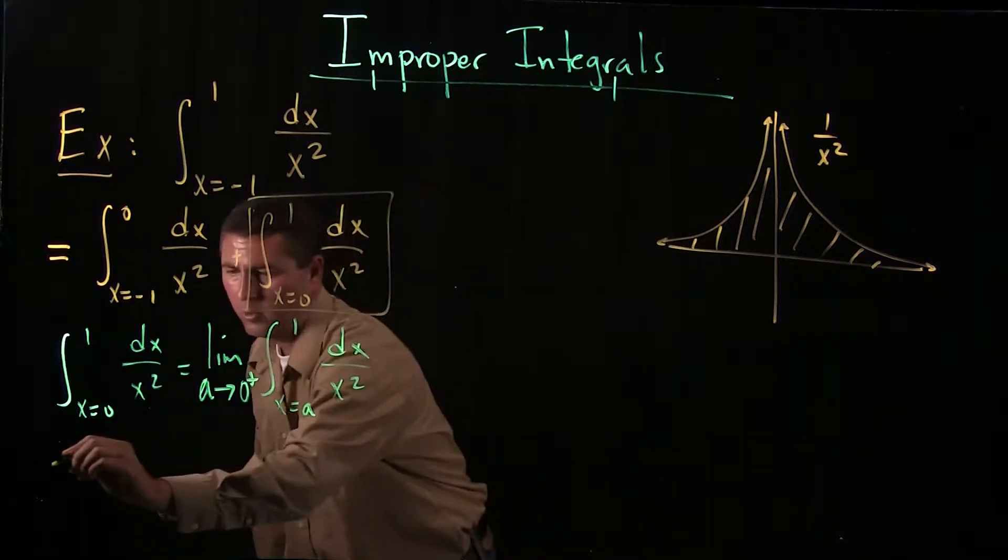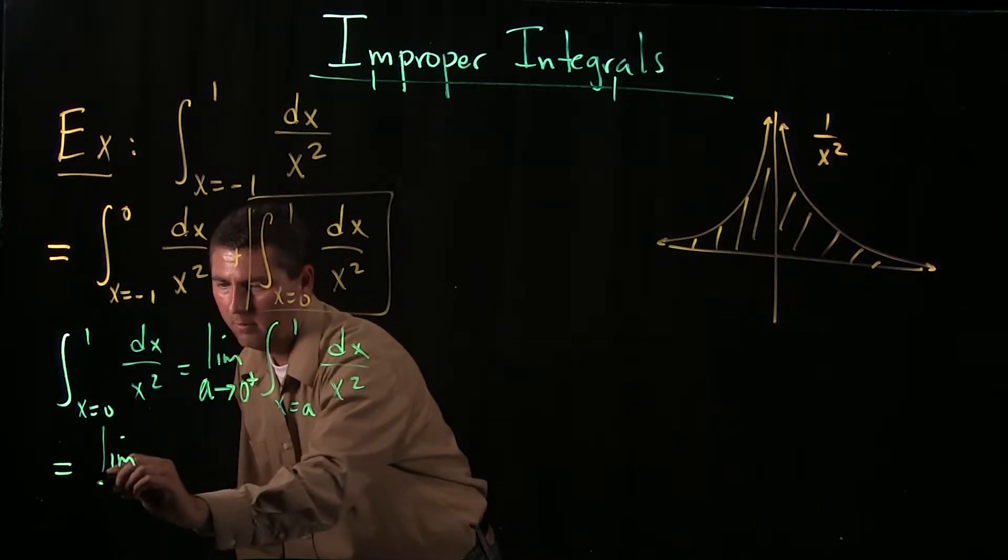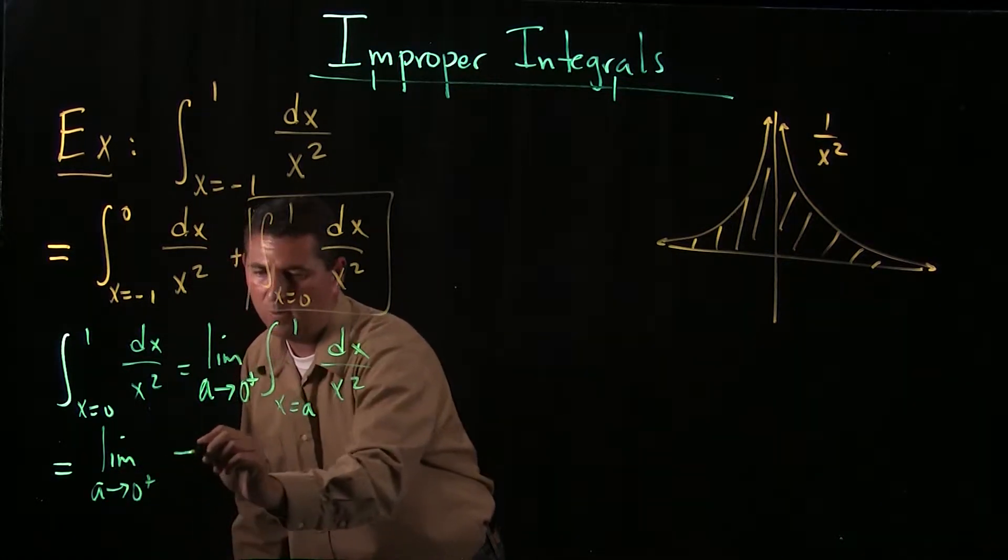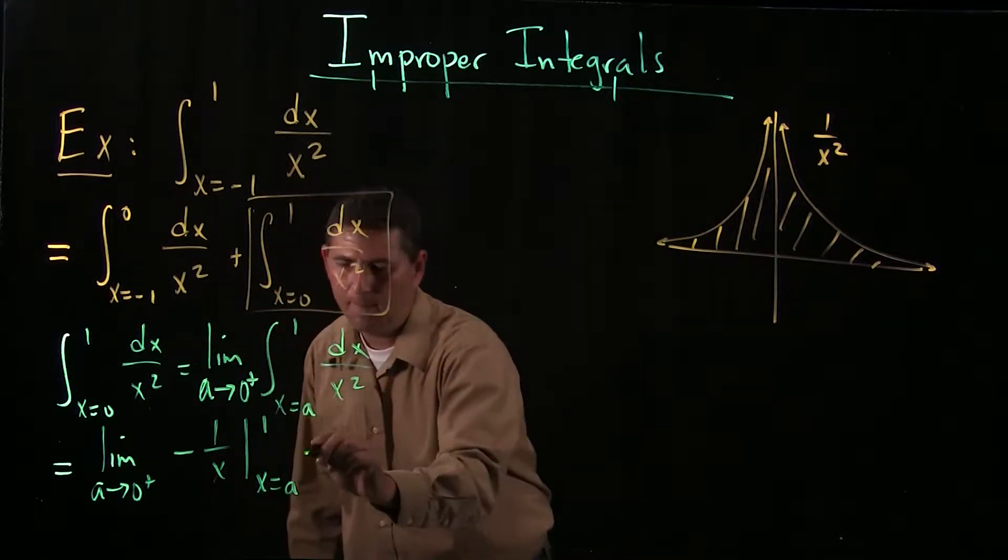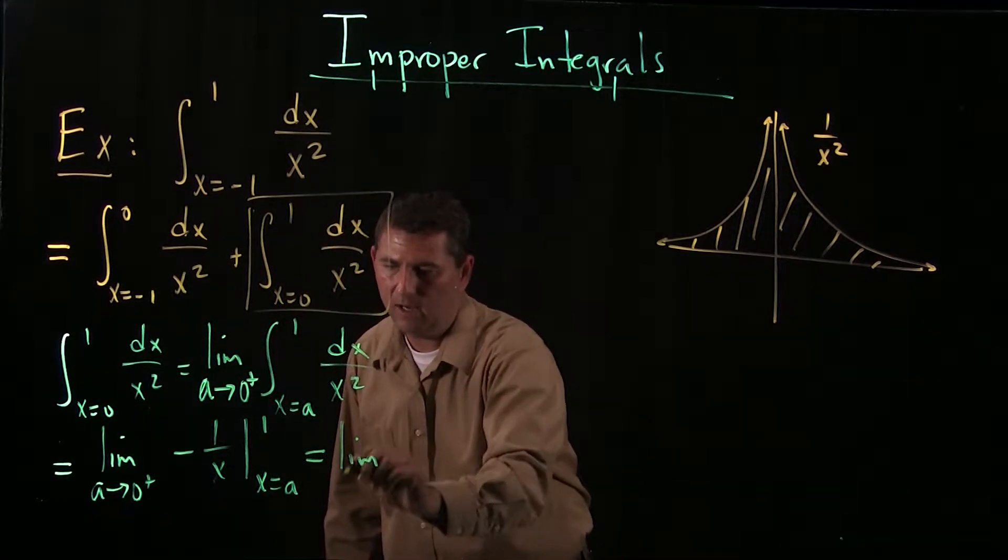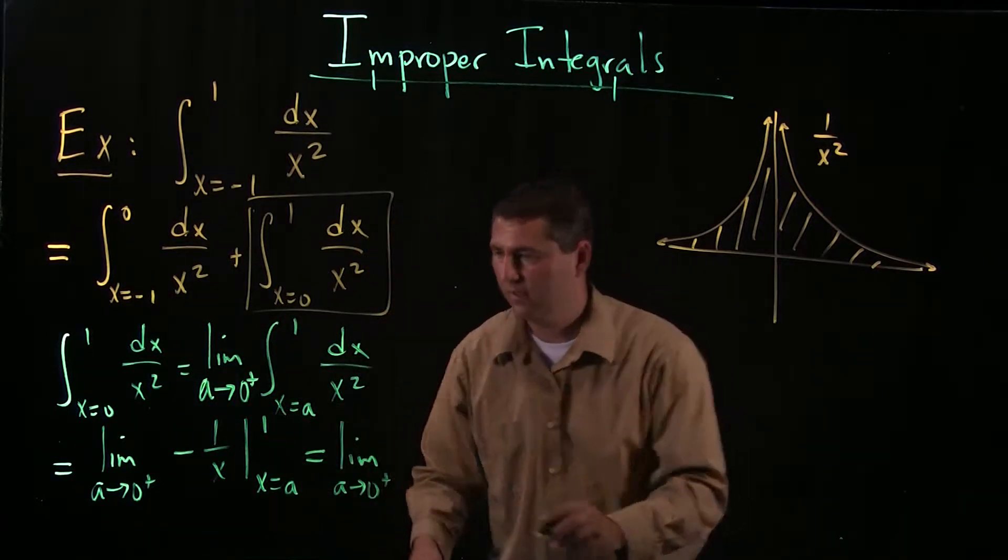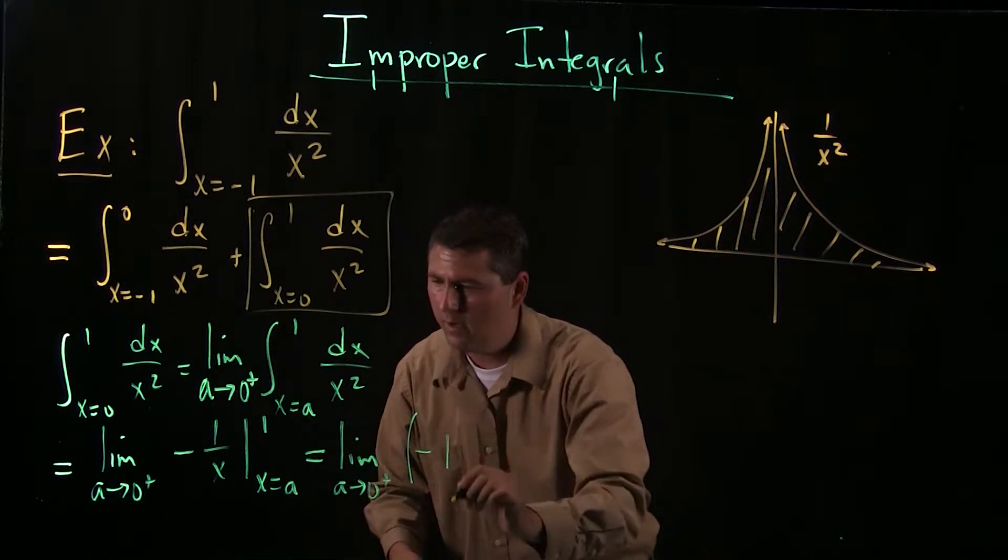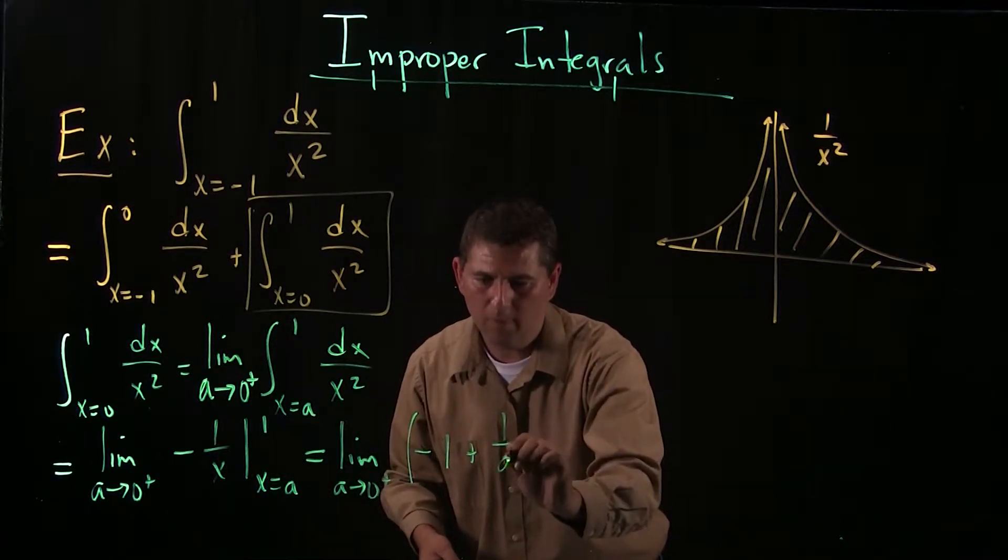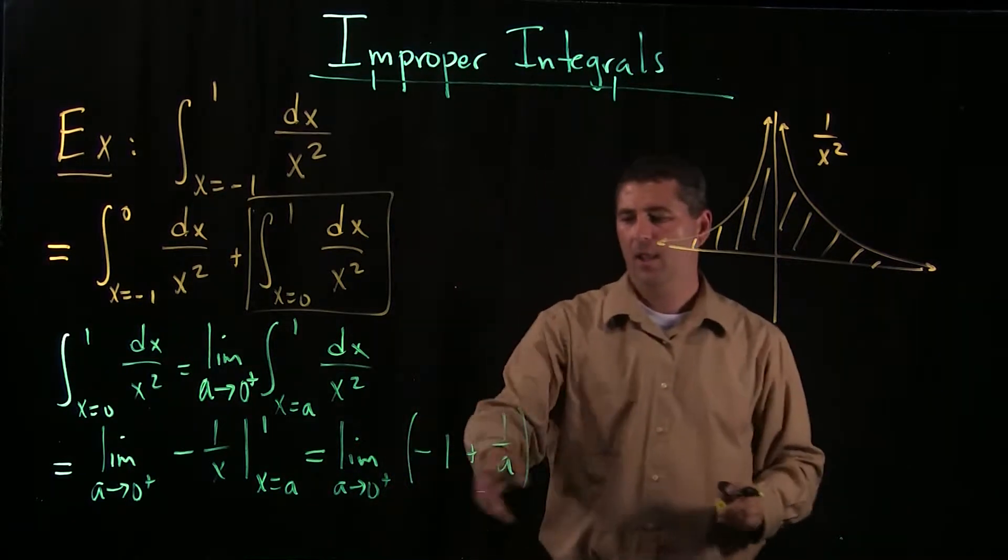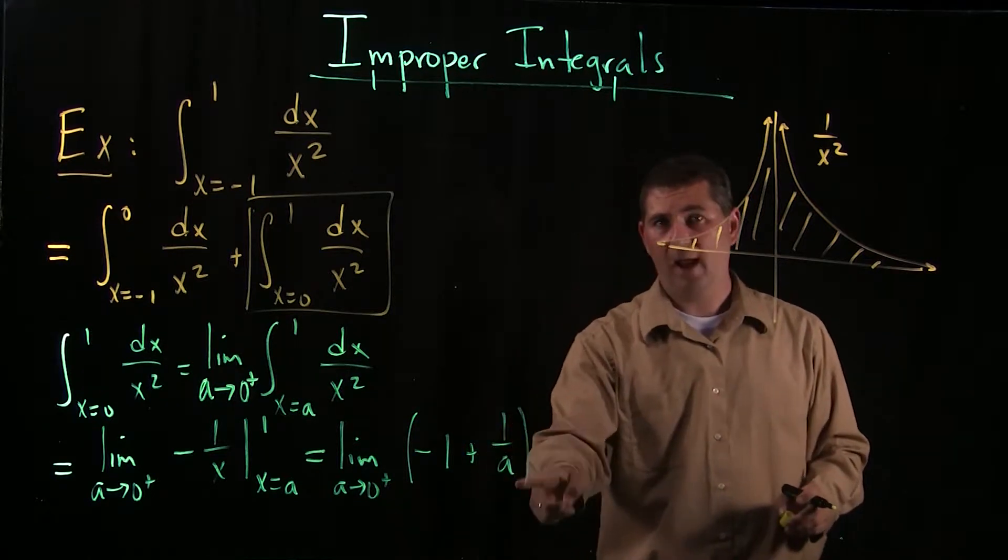This is how I'm going to compute an improper integral, which is what we have here. Whenever you have a discontinuity in the middle, we'll call that an improper integral. I go through the normal game here, I compute an antiderivative keeping my limit around. Antiderivative is negative 1 over x, I compute it between a and 1.